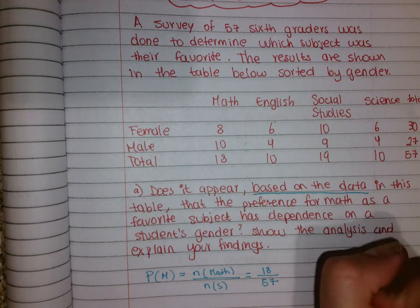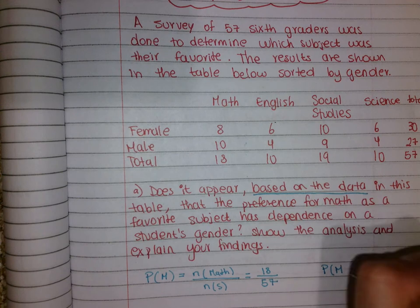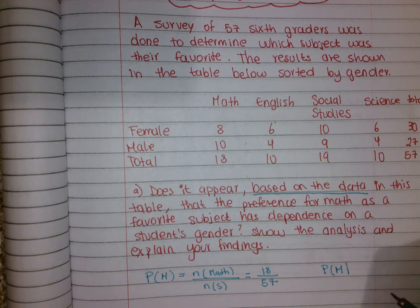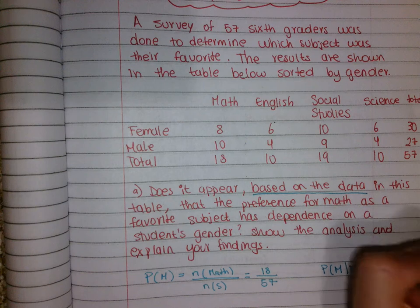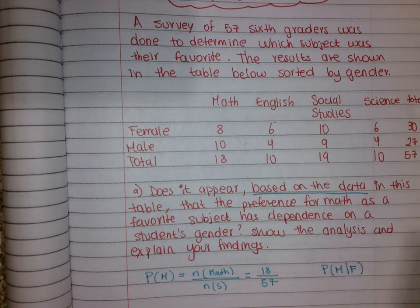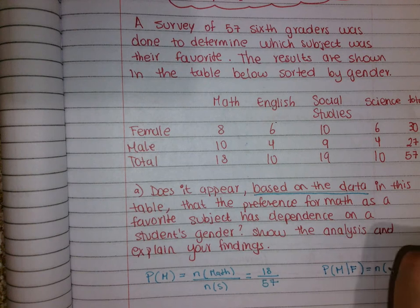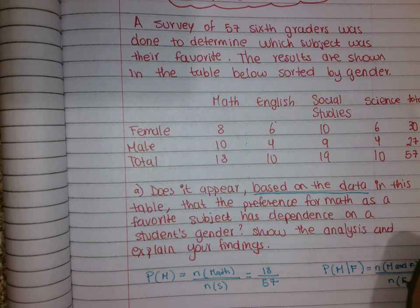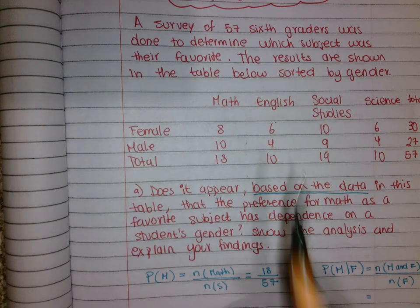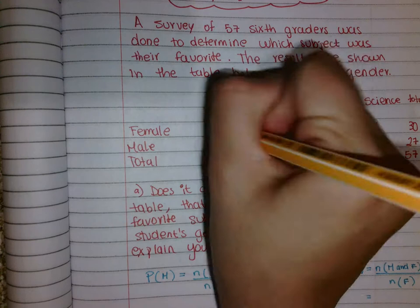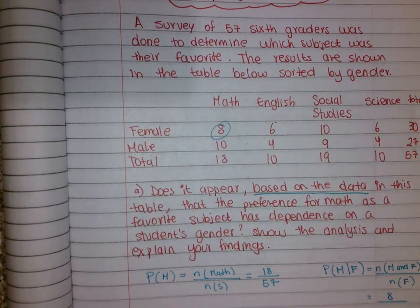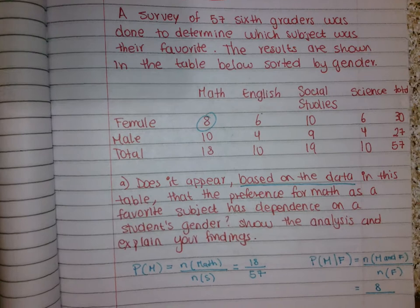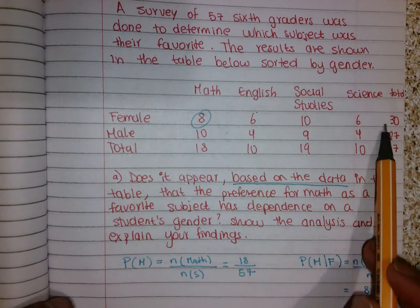The other probability I need is P(math | gender) — the probability of liking math given a specific gender. It doesn't matter which gender you pick; either way there's a gender, so you can choose whichever you want. I'm going to go with female. For this, I look for math and females — the intersection — which is 8, over the total number of females, which is 30. So P(math | female) = 8/30.